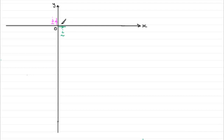So if I had a velocity vector of minus three i plus two j, what's it going to look like? Well, we've got to go three units back in this direction and two units up, so it's going to look something like that.